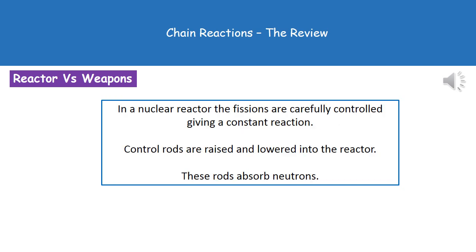The way that we actually control these fissions is by using something called a control rod. This is all going to be very carefully monitored, and when the reaction is starting to happen a little bit too quickly, the control rods are going to be lowered in and they absorb excess neutrons. That means we can keep the reaction going at a nice constant rate by absorbing any excess neutrons by lowering the control rods in when too many are present.